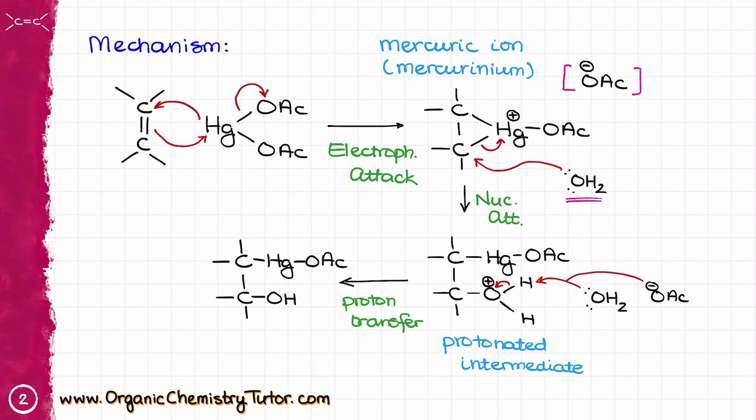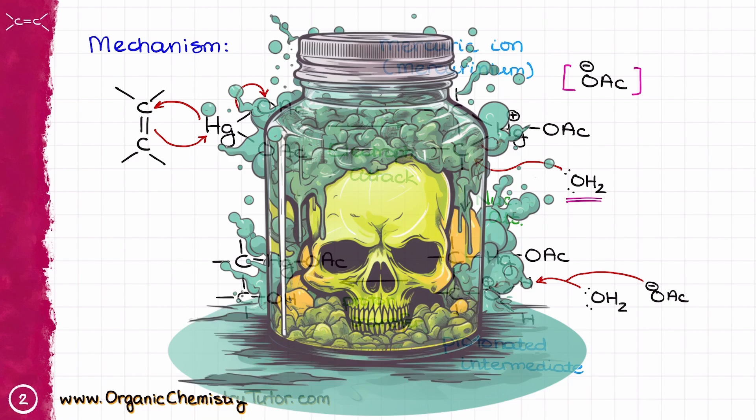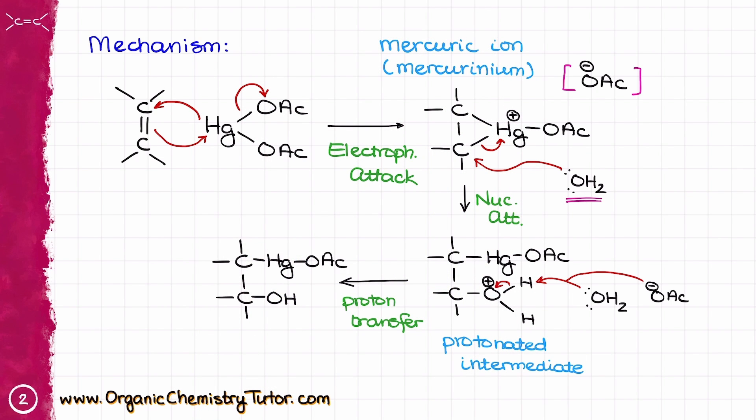Now nobody in their right mind will ever try to isolate this intermediate because mercury organic compounds are incredibly toxic which means that we are going to work it up immediately while it is still in the reaction mixture. So once we get this intermediate we are going to do the last step on this reaction which is going to be reduction. And that reduction is typically performed by sodium borohydride, NaBH4, in basic media.